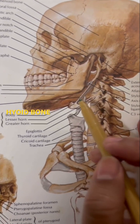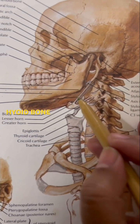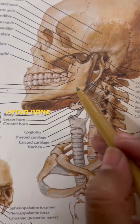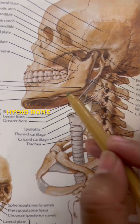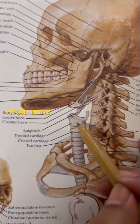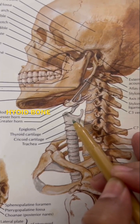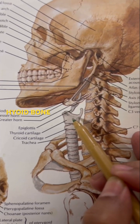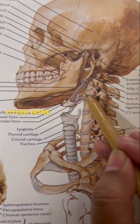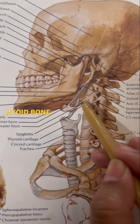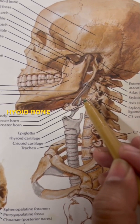Its relationship with the surrounding structures is that the mandible is situated superiorly, the thyroid cartilage and larynx are situated inferiorly, while the epiglottis and pharynx are situated posteriorly.